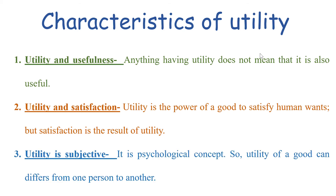The third characteristic is that utility is subjective — it is purely a psychological concept. So utility of a good can differ from one person to another. For example, if a person consumes alcohol, then for that person alcohol has the utility to satisfy his or her want. But for a person who does not consume alcohol, the alcohol will not have any utility. So utility differs from one person to another.